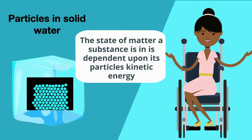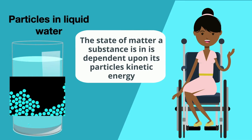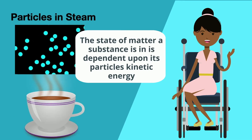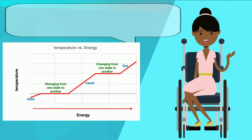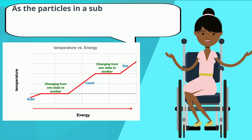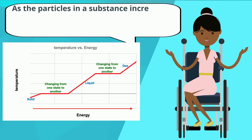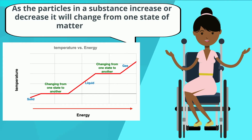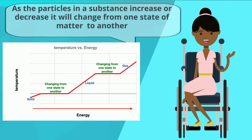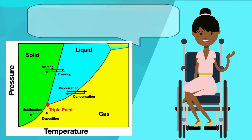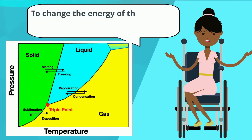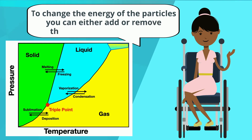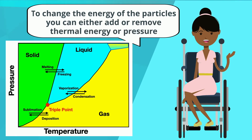The state of matter a substance is in is dependent upon its particles' kinetic energy. As the particles in a substance increase or decrease their energy, it will change from one state of matter to another. To change the energy of the particles, you can either add or remove thermal energy or pressure.